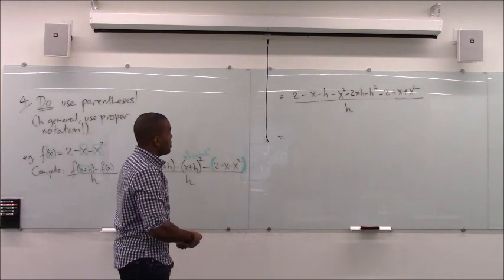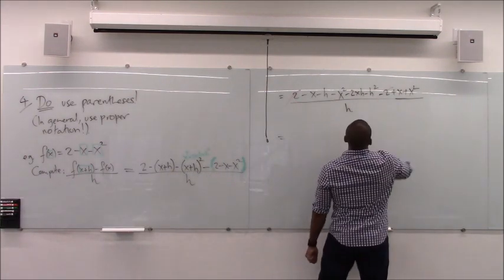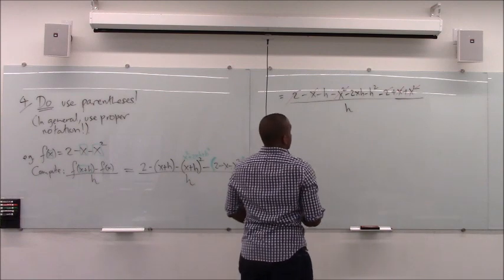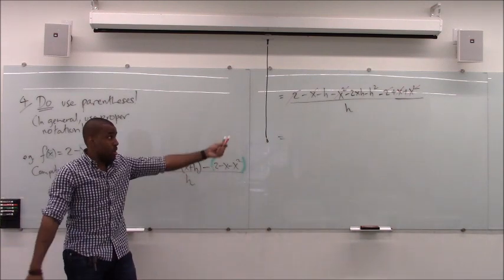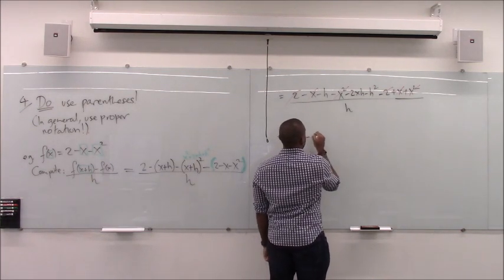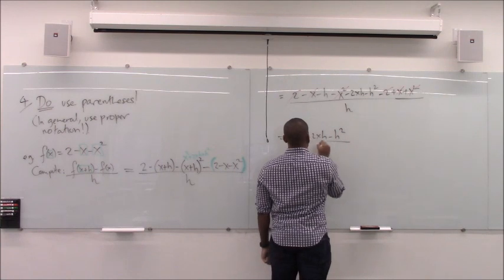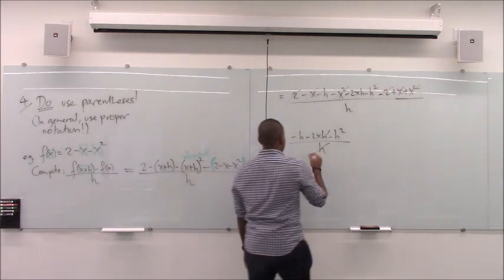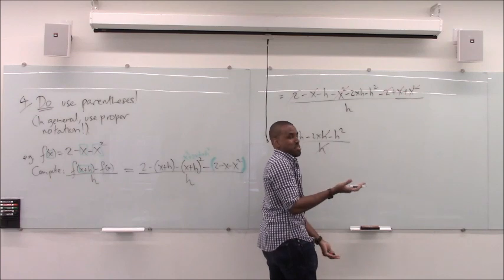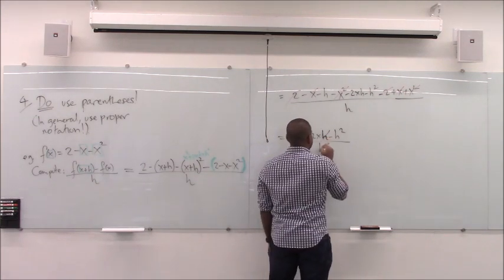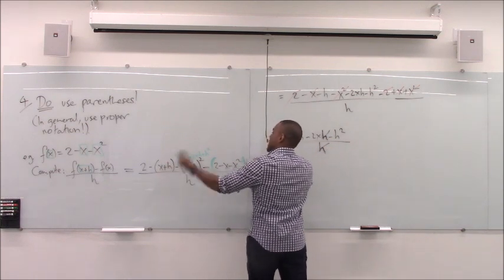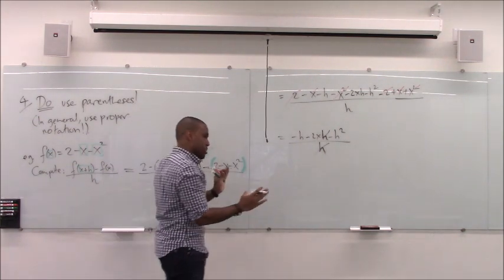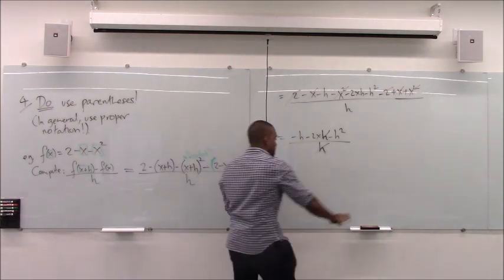Now combine like terms: 2 − 2 cancels, x − x cancels, x² − x² cancels. We're left with −h − 2xh − h², all over h. At this point you might want to cancel the h from the numerator and denominator — but you cannot cancel just yet, because the numerator is still a sum. First, factor out h from the numerator: h(−1 − 2x − h) / h. Now there's a multiplication, so we can cancel.